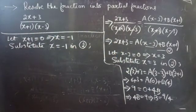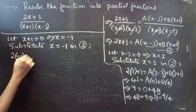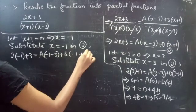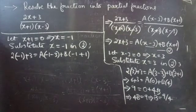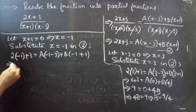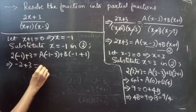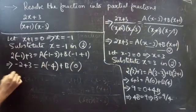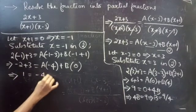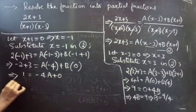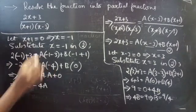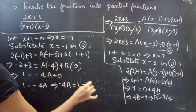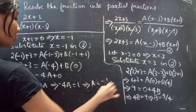Substituting x equals minus 1 in equation 2: 2(minus 1) plus 3 equals A into minus 1 minus 3 plus B into minus 1 plus 1. Since minus 1 plus 1 is 0, this gives 1 equals A into minus 4 plus 0. So minus 4A equals 1, therefore A equals minus 1 by 4.